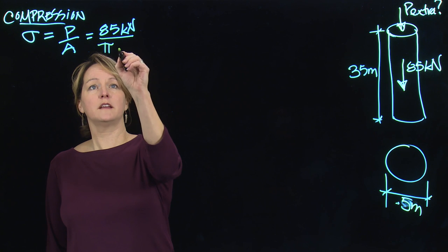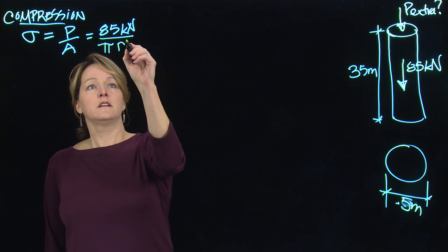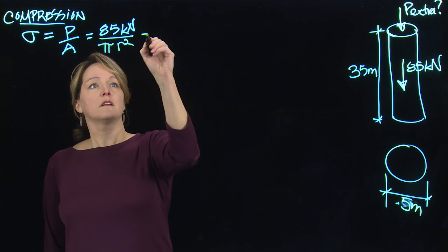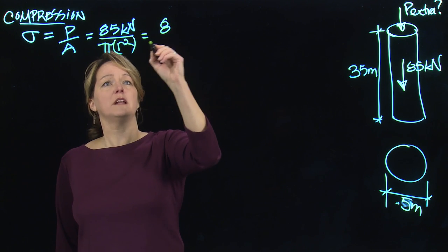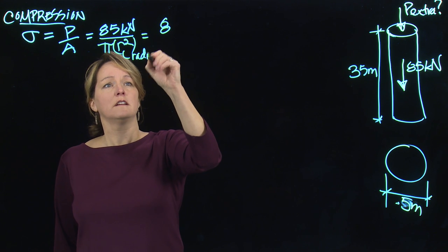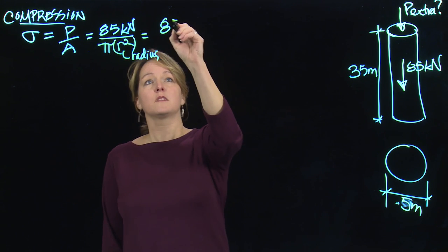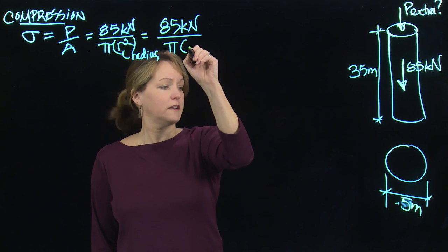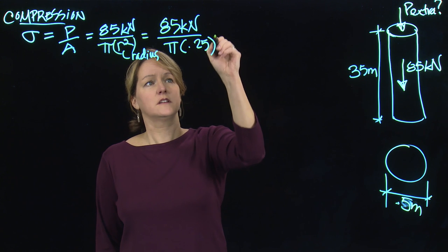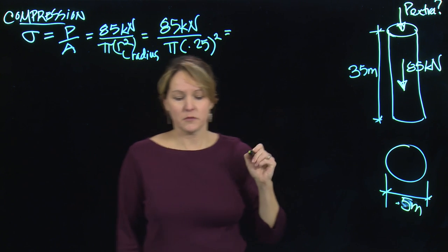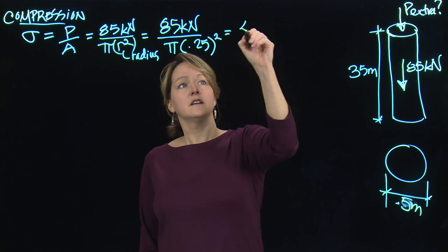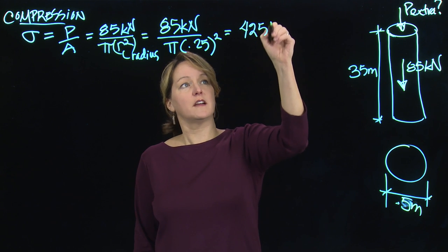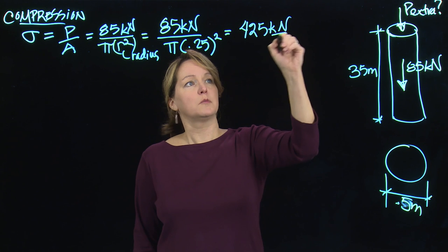If I calculate the area, it would be pi times r squared. r is the radius, half the diameter. That will be 85 kilonewtons over pi times 0.25 squared. That will give me the stress in the tree, and that is 425 kilonewtons per meter squared.